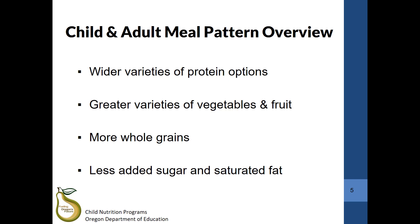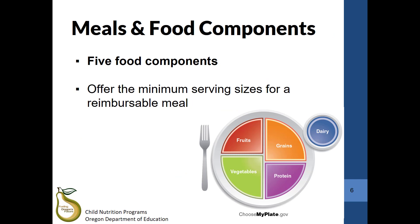Changes to the new meal pattern are listed throughout this presentation in bold. With the new meal pattern, there are now five food components instead of four. Instead of having fruits and vegetables as one component, the component is now split into a separate fruit component and a separate vegetable component.